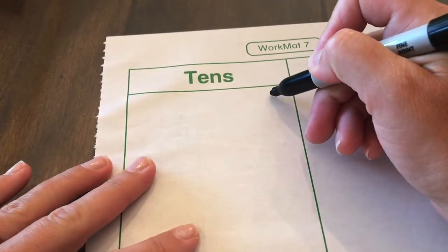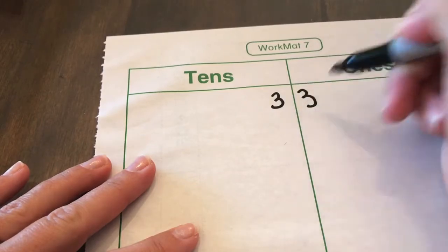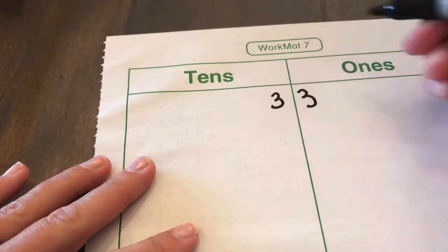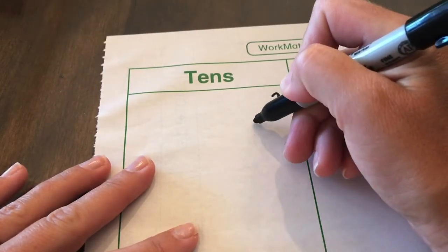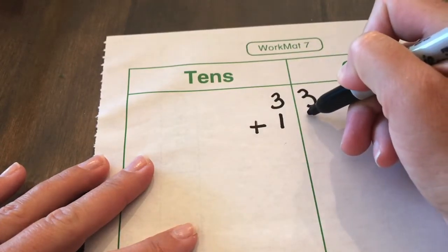So let's say that we have 33. You would have your three tens, your three ones, plus 16.